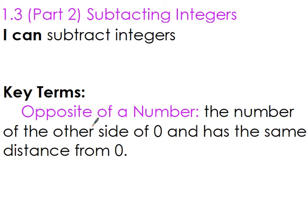The first thing we need to know about subtracting integers is what the opposite of a number is — that's our key term for this lesson. The opposite of a number is the number on the other side of zero that has the same distance from zero. So the opposite of four is negative four — it's the same number, just the opposite sign.